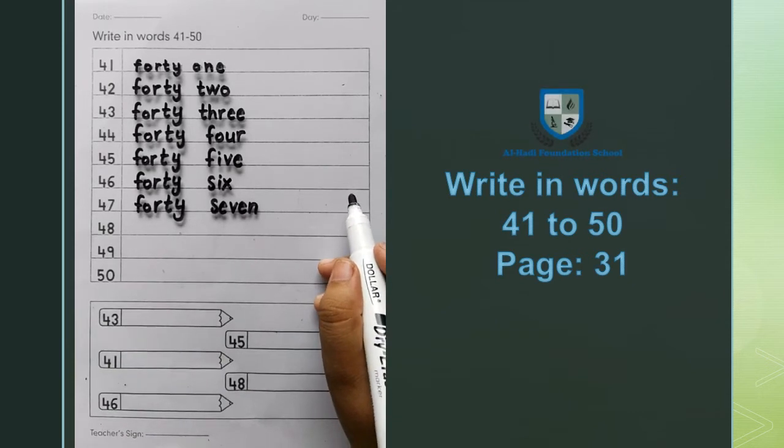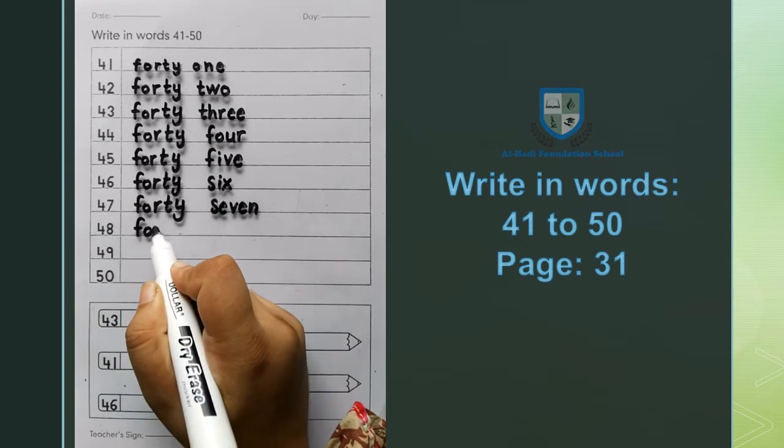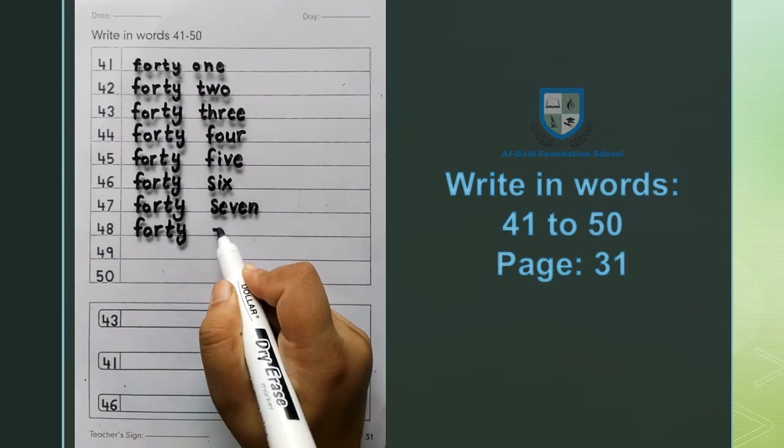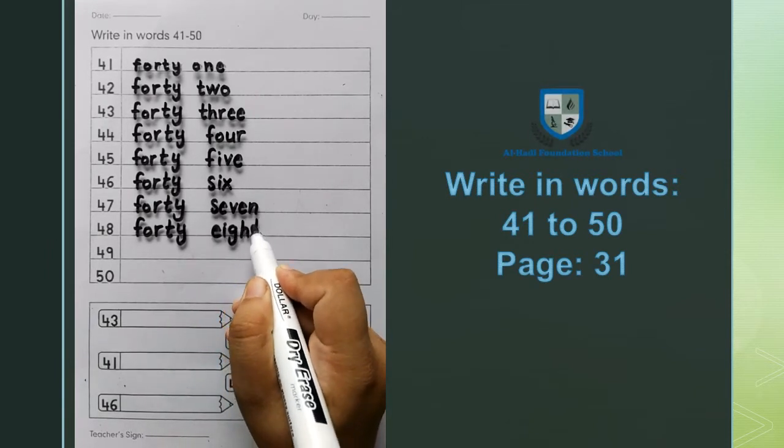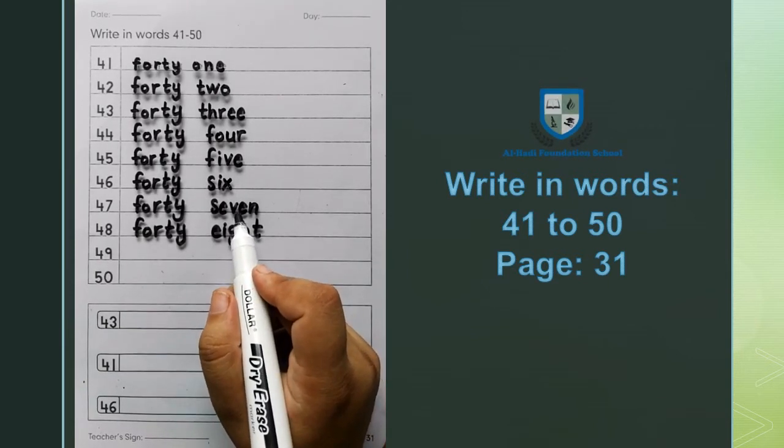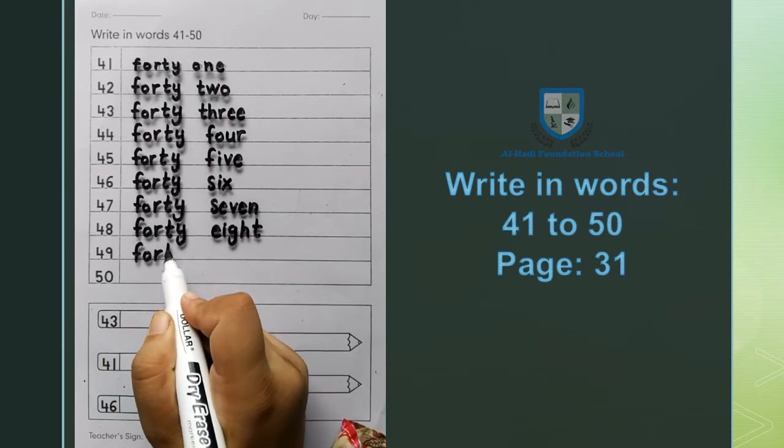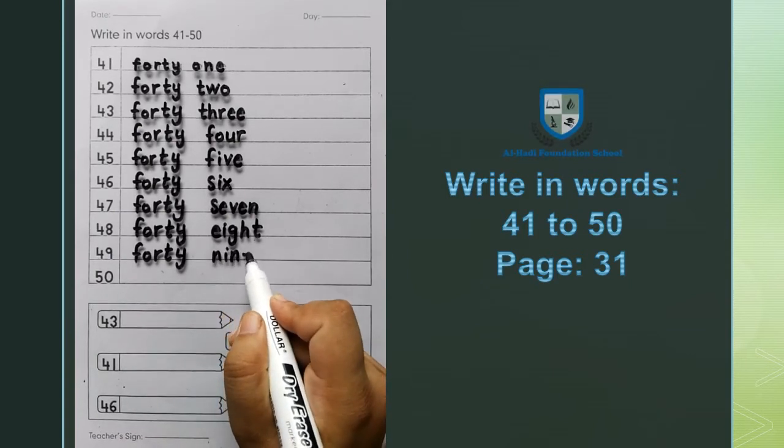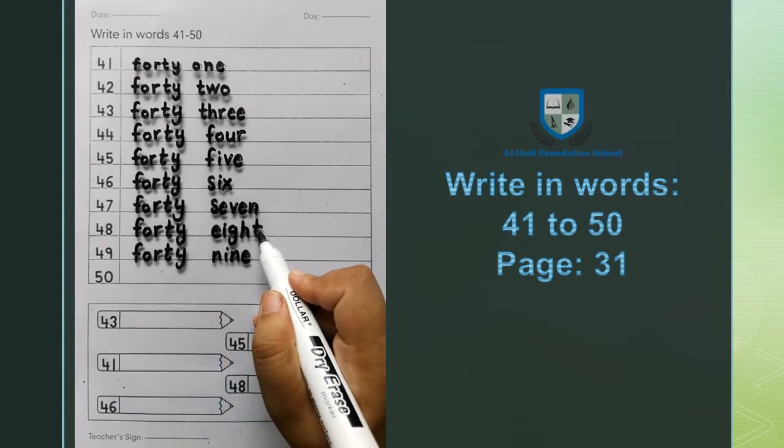Next 48: F O R T Y, forty, E I G H T, eight, forty eight. Next 49: F O R T Y, forty, N I N E, nine, forty nine.